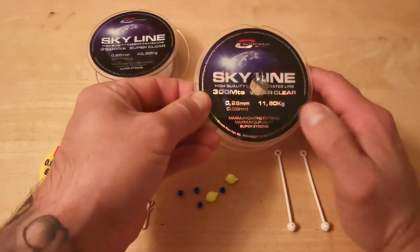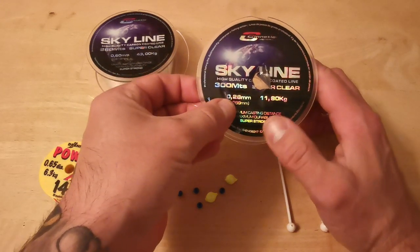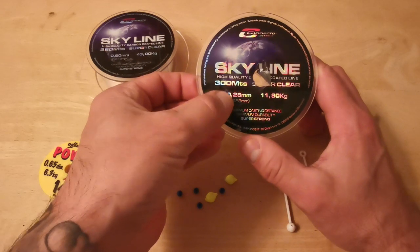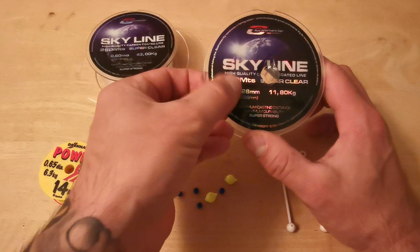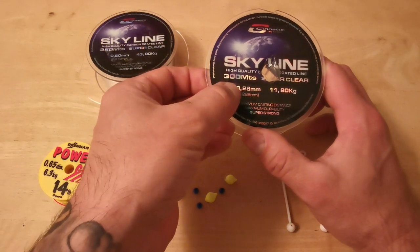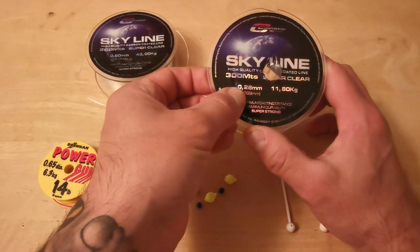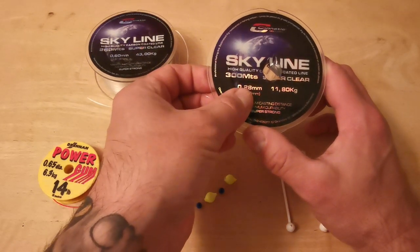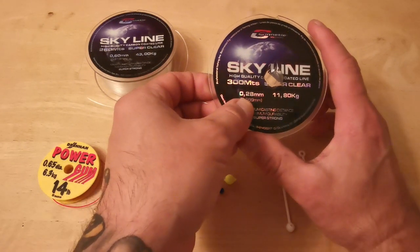For the hook snoods, I'm not looking at this with the breaking strain in mind, I'm more looking at this with the diameter - 0.28mm. I don't want to go any thinner because small wrasse or things could be chomping at the baits on this. I don't want to start losing loads of hooks. 0.28 is as thin as I would go with toothy little critters.